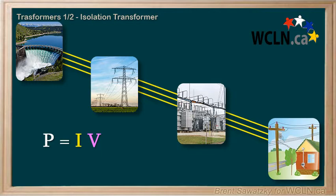Considering this, we know that we can transmit the same amount of power with high voltage and low current, or with low voltage and high current. If we step down the voltage, we increase the current, or vice versa.